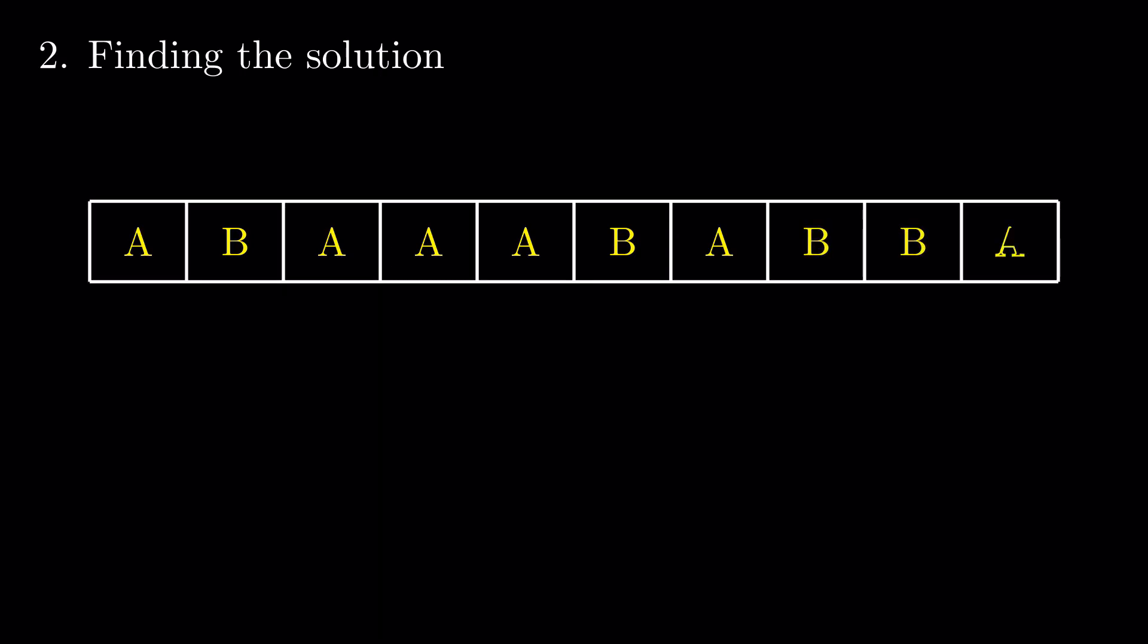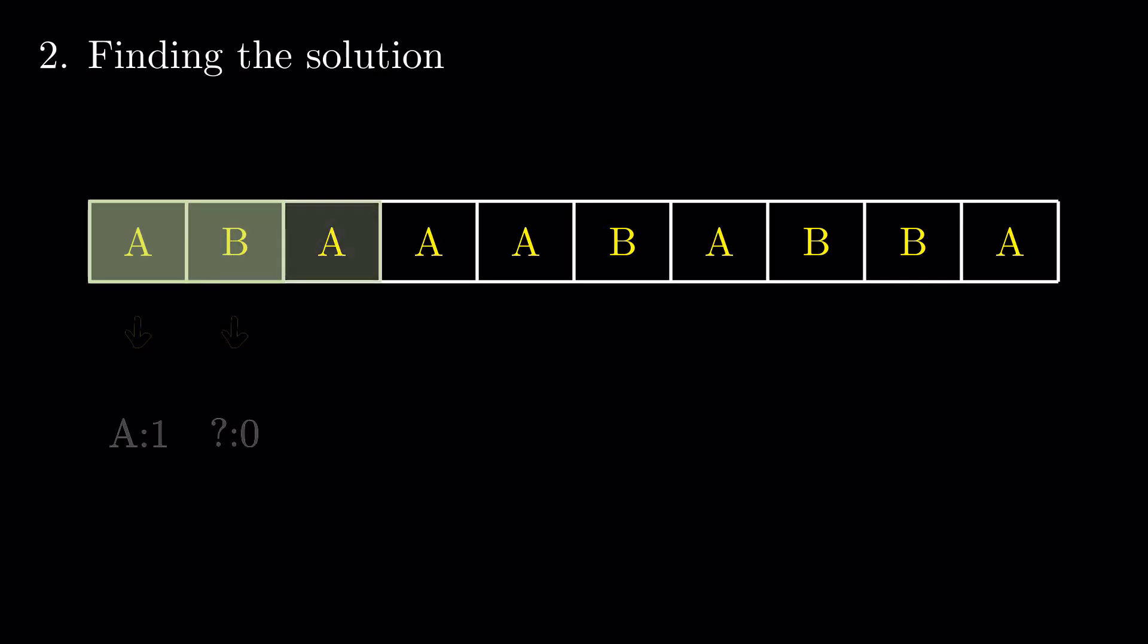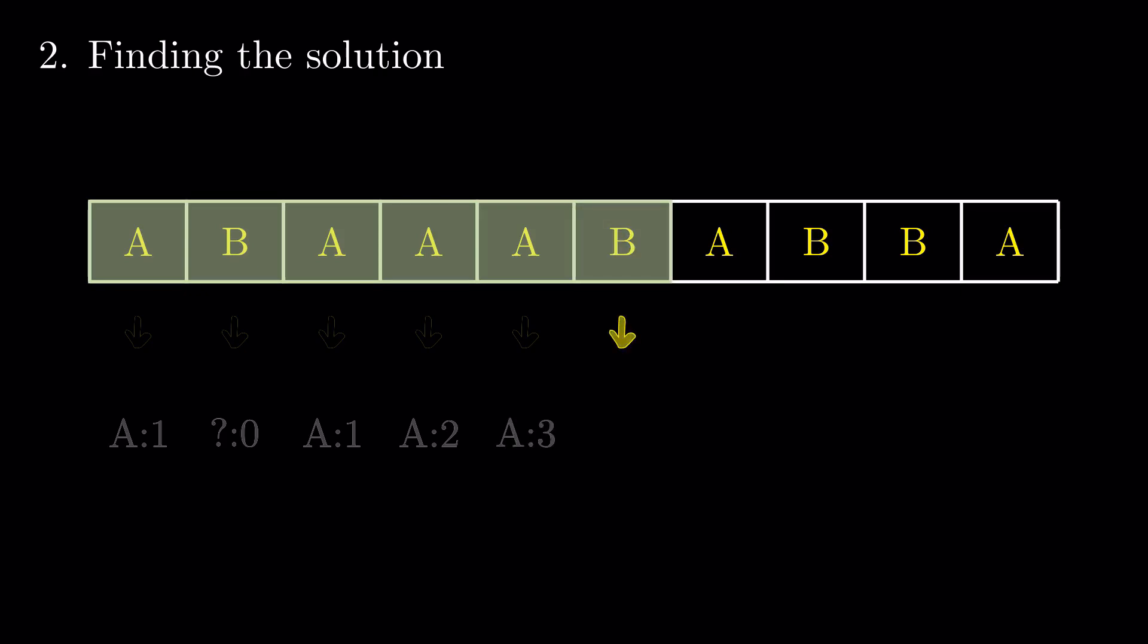Pass the vector and keep in memory the difference between the frequencies of A and B up until that point, and which element has the higher frequency. To do this, we just add one to the counter when we encounter the most frequent element up to that point and subtract one when we encounter the other one. When the counter is zero, we forget the most frequent value and set it in the next step.